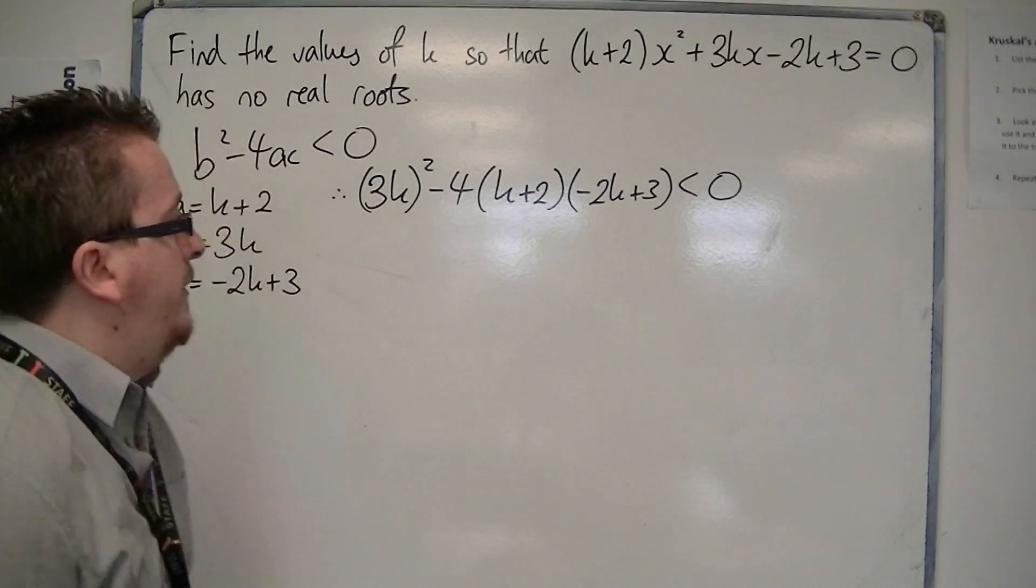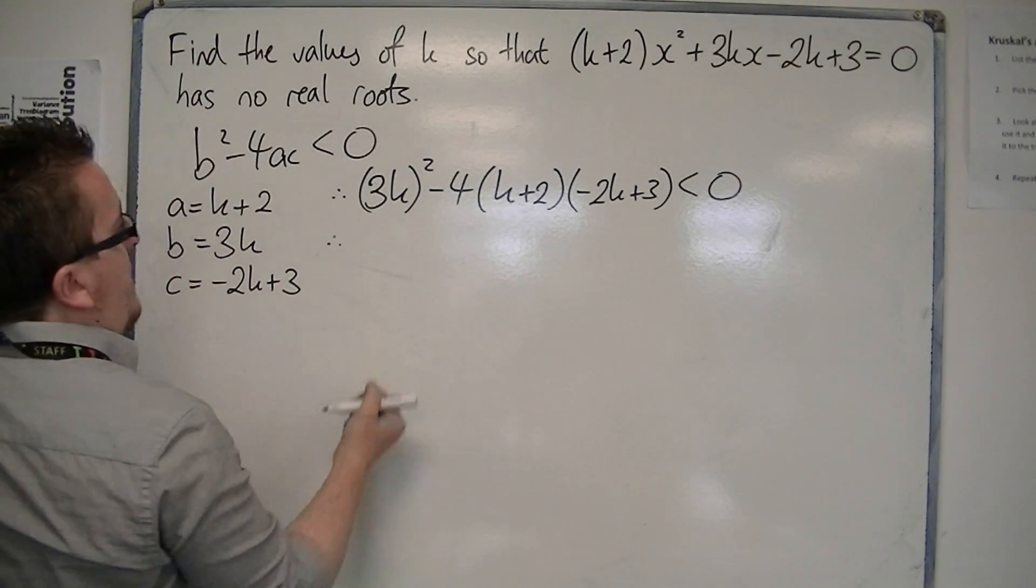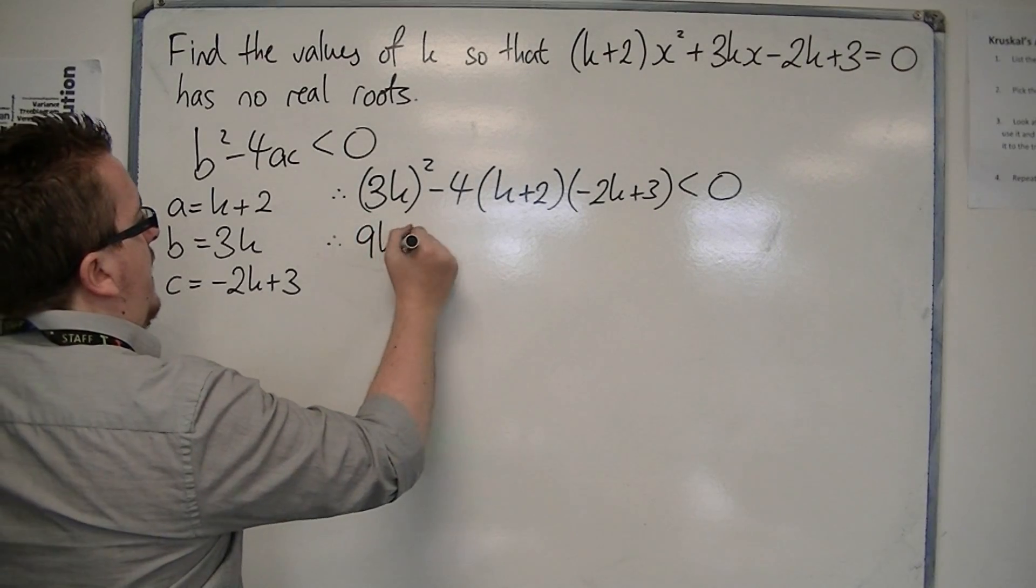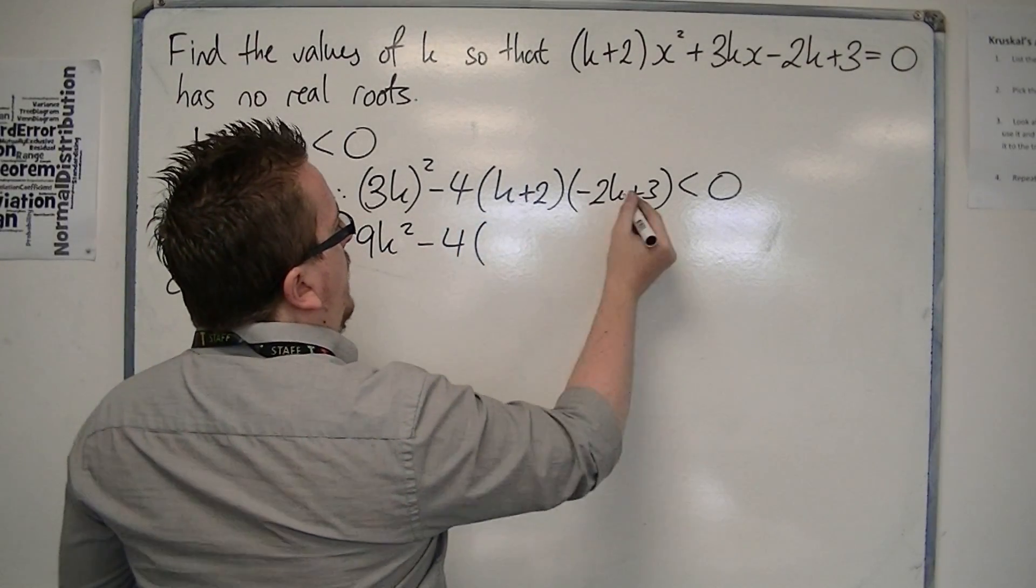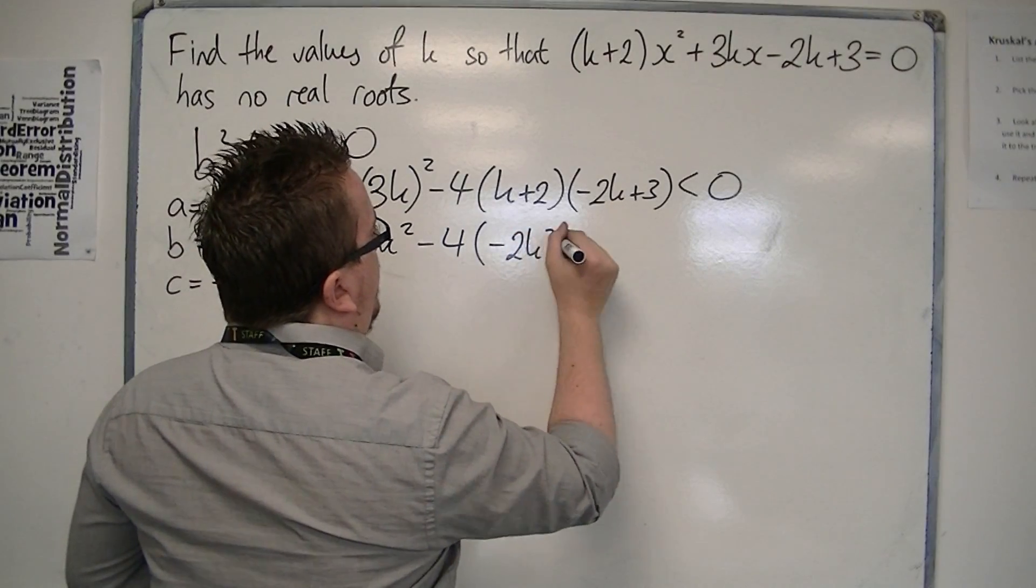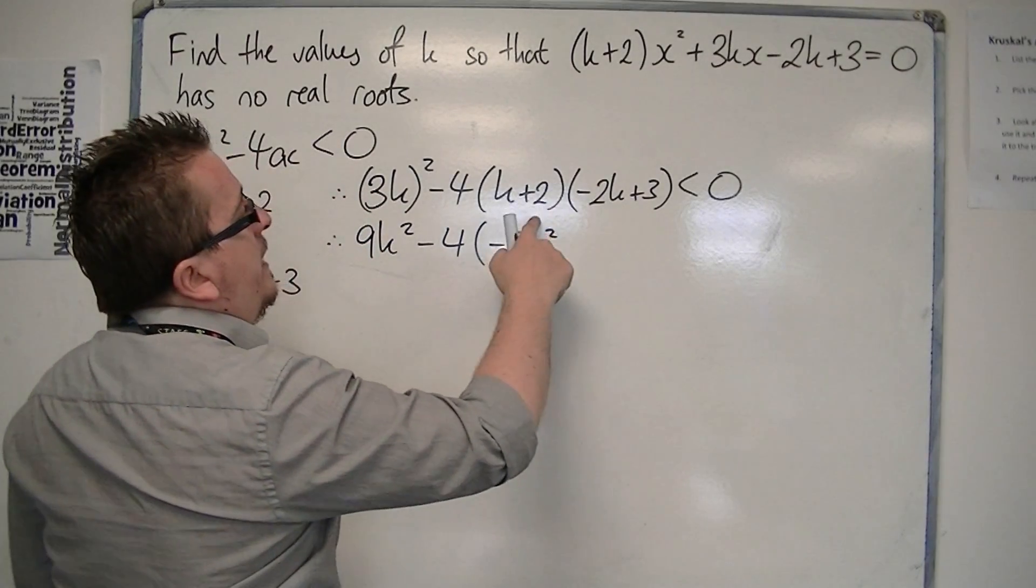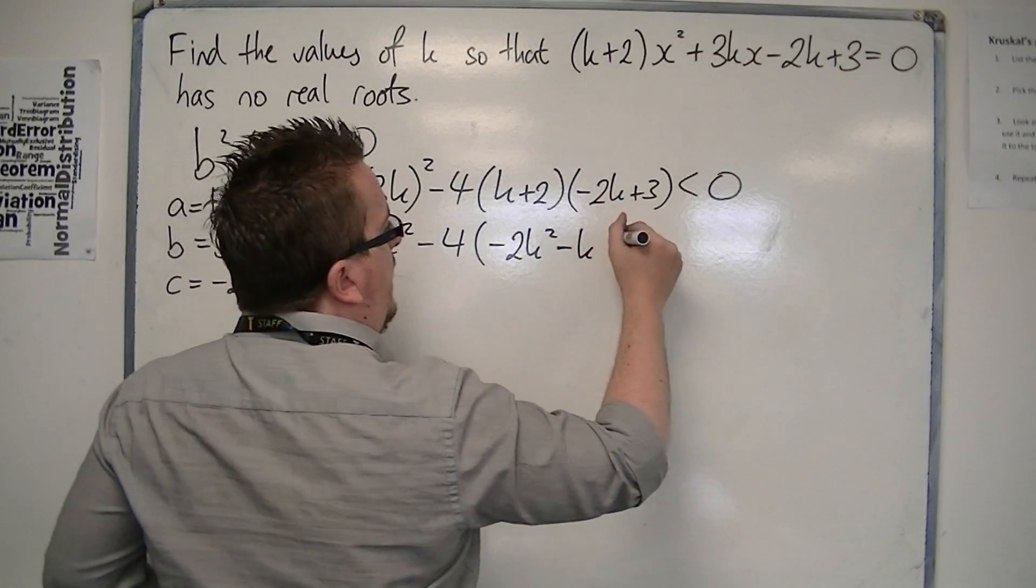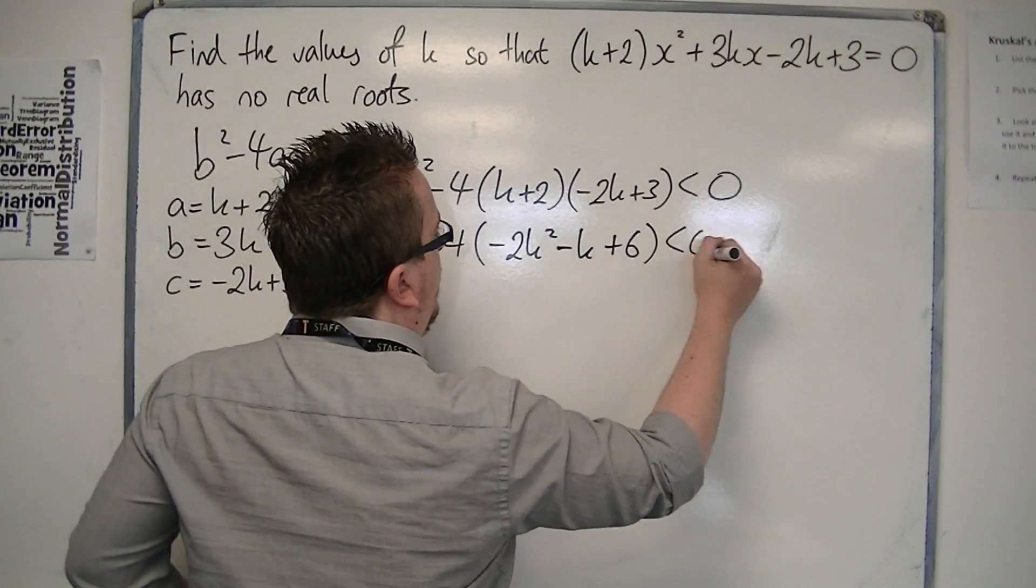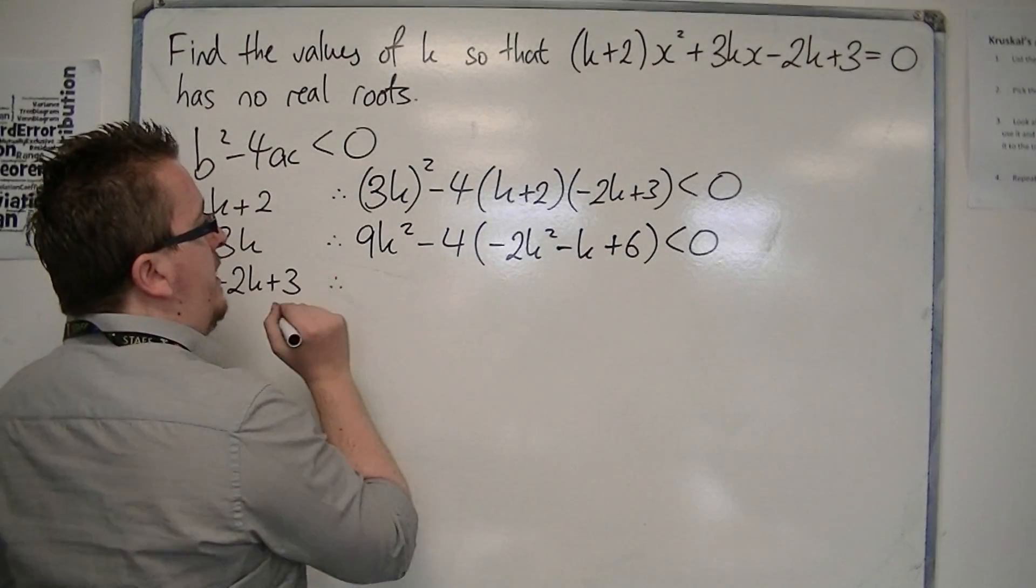So we're going to have to multiply out a lot of brackets here. So we've got 3k all squared is 9k², take away 4 lots of, well we've got -2k², 3k, take away 4k is -k, plus 6 is less than 0.